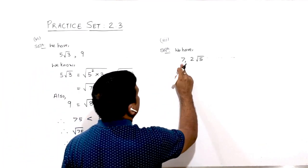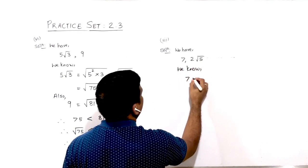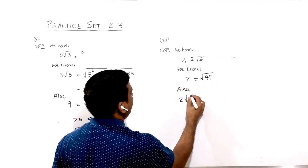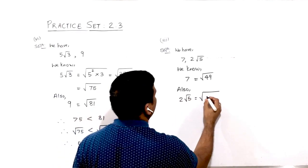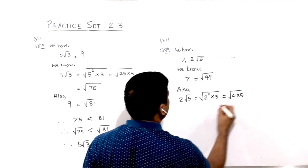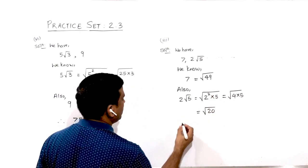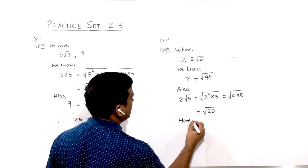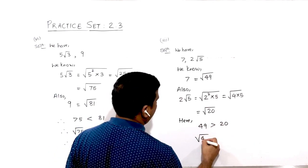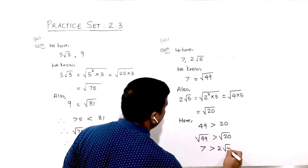For sum number 7: comparing 7 and 2√5. We know 7 can be written as √49. Also, 2√5 can be simplified as √(2² × 5) = √(4 × 5) = √20. Now comparing: 49 is greater than 20, so √49 is greater than √20, therefore 7 is greater than 2√5.